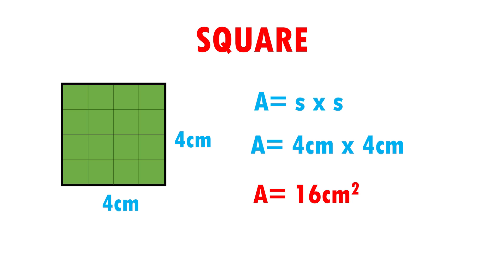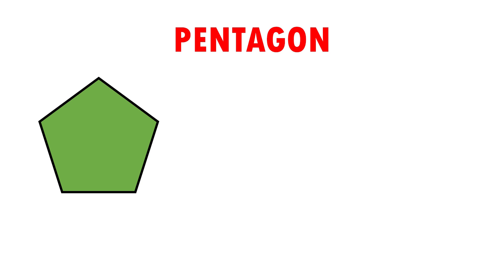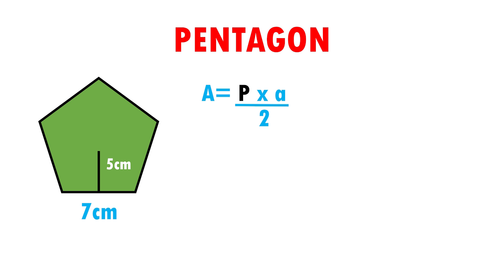Let's see another example. Here I have a pentagon that measures 7 cm per side and also has an apothem of 5 cm. The formula to calculate the area of the pentagon is: area is equal to perimeter times apothem over 2. The first thing we have to do is find the perimeter of the pentagon.